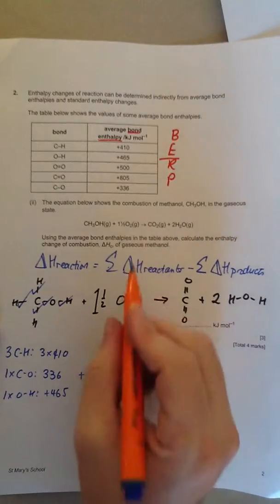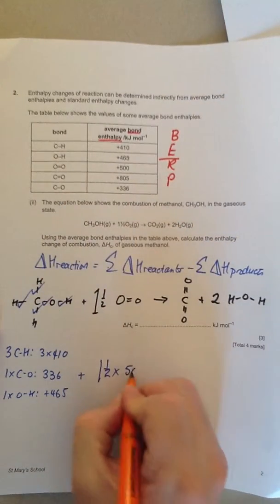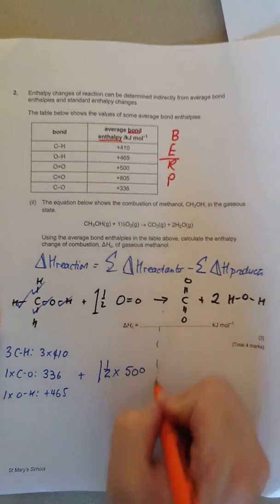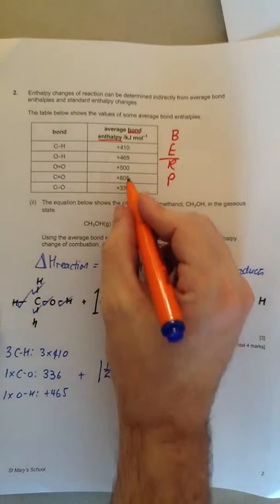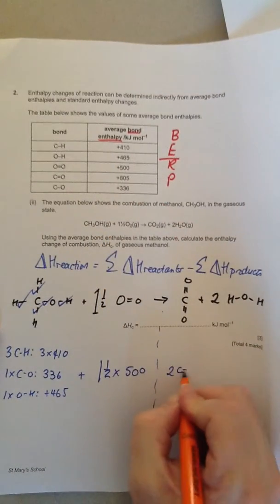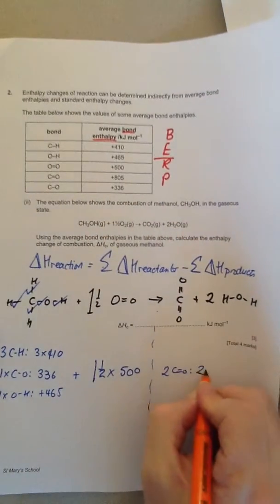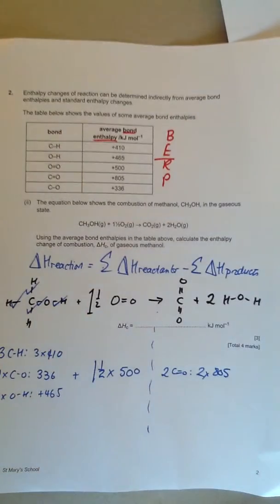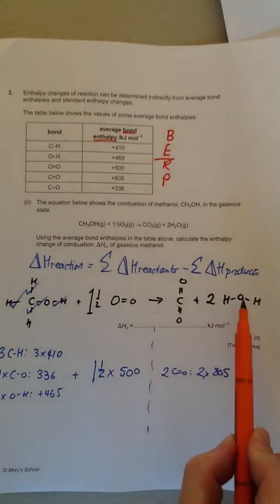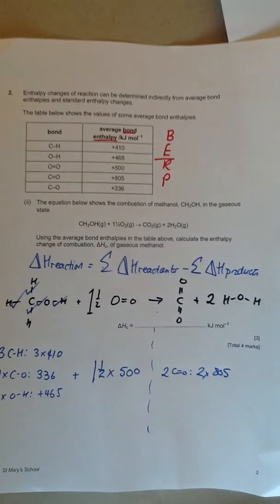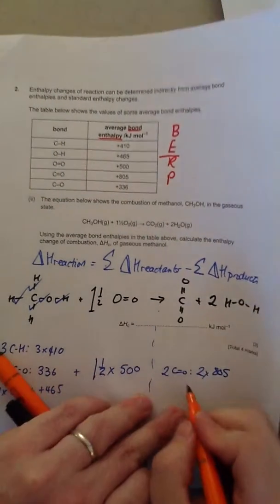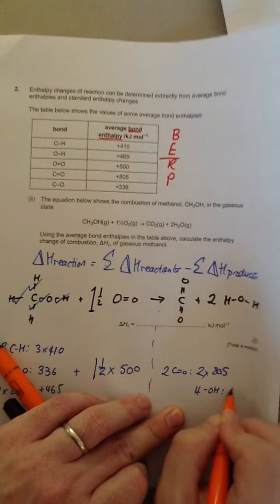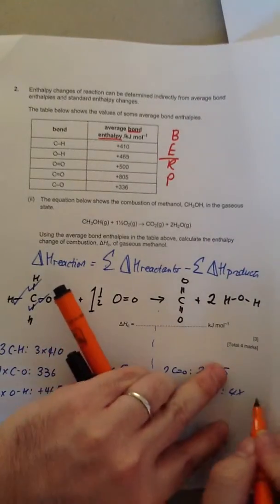And then there is one and a half times the oxygen-oxygen double bond times 500, because there is one oxygen-oxygen double bond. There are two C double bond O's, which is therefore two times 805. And then how many hydrogen-oxygen bonds are there in the products? There are one, two for every water molecule, and there are two water molecules, so that means there are therefore four OH's, which is four times 465.